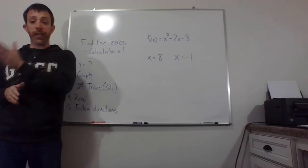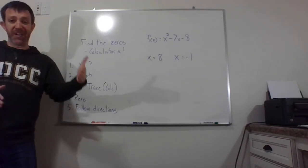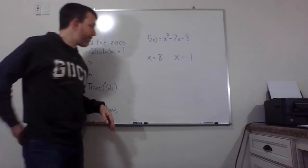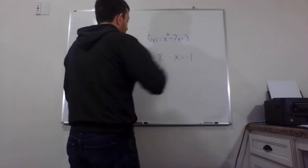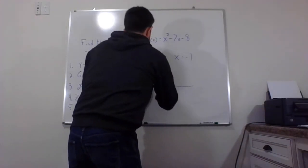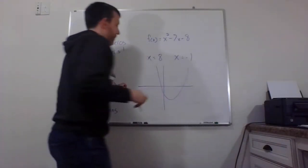Basically, it's going to ask you for a left bound, a right bound, and then a guess. It wants you to fence in. So with this graph, what it looks like is something kind of like this. Down and it goes back up. It's just a basic parabola.